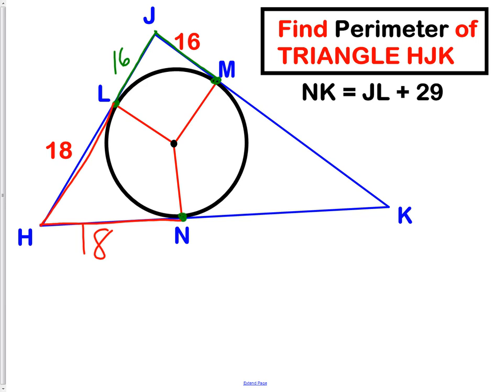The last thing we're going to be using is what we're given right up here. It tells us that NK, the segment that joins the endpoint K to the tangent point N, NK is equal to JL plus 29. Well, JL is 16, plus 29 equals NK.